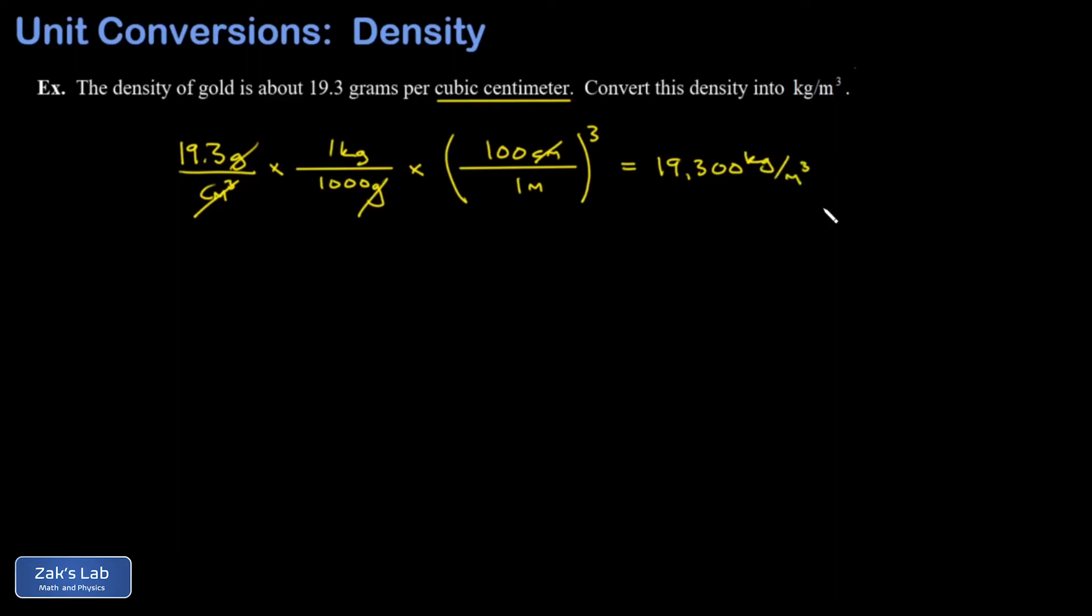And this is a really useful fact to remember in a physics course: if you're converting from grams per cc into kilograms per cubic meter you just multiply by a thousand.